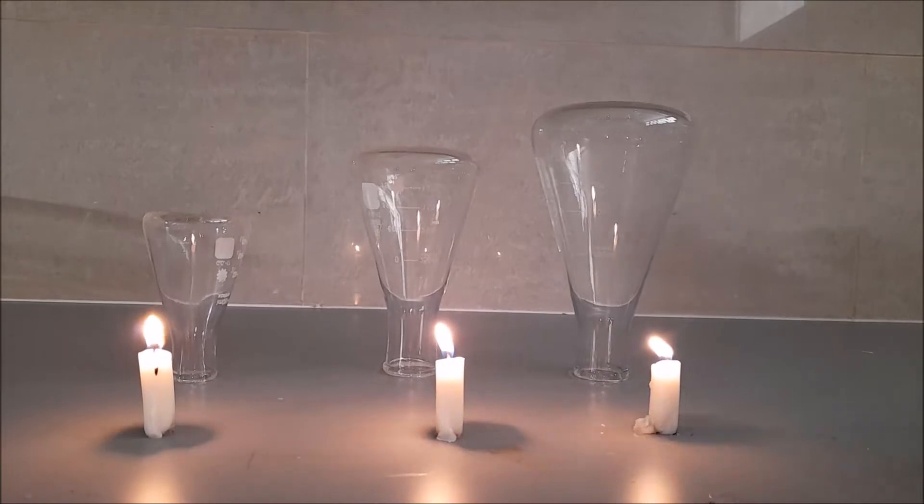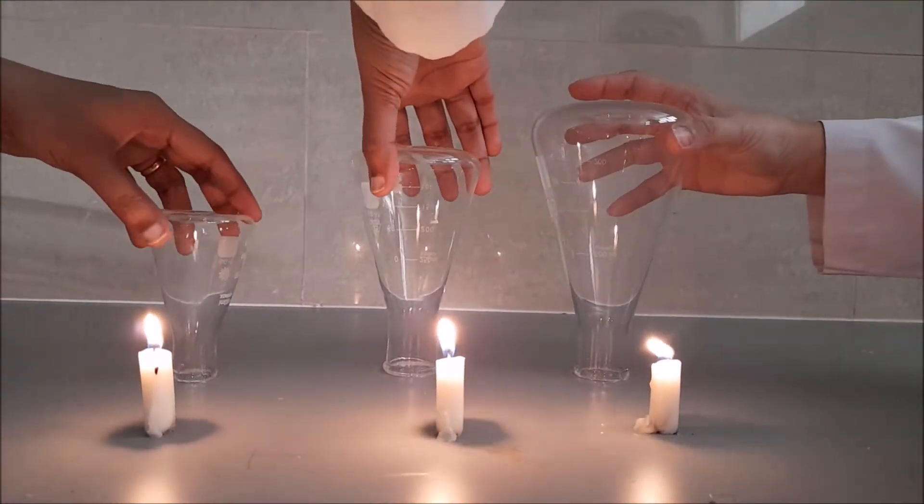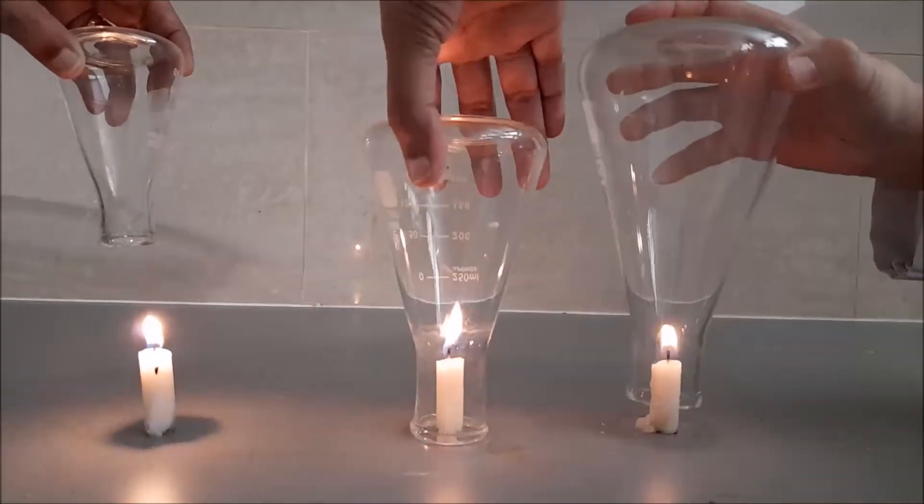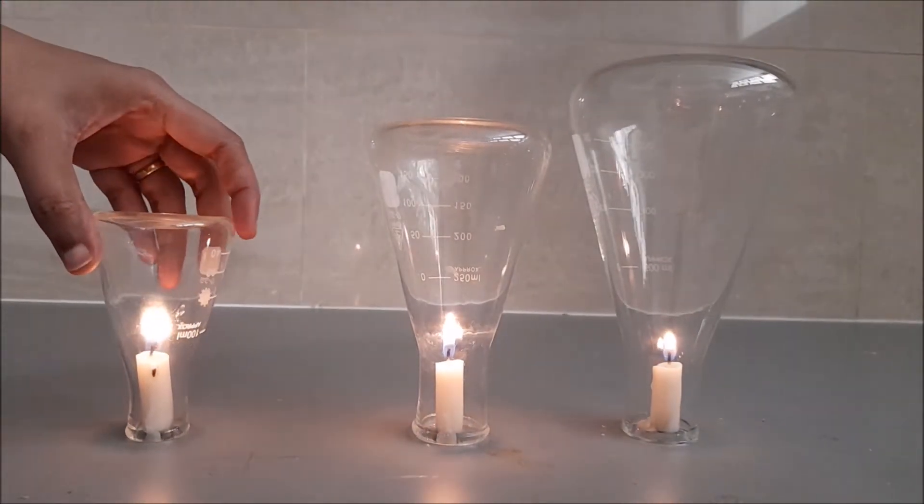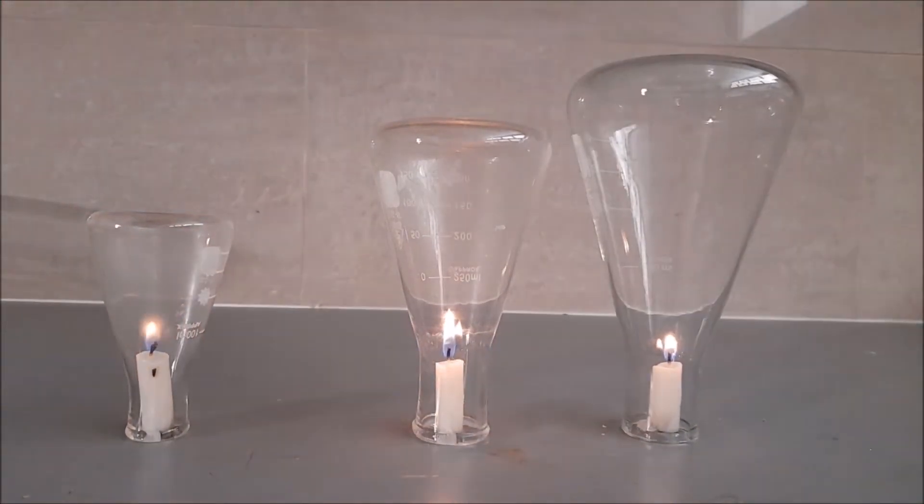A smaller flask contains a smaller amount of oxygen compared to a bigger flask, and the candle burns only as long as there is air present. So the smaller flask burns out first compared to the bigger flask because the bigger flask has more oxygen.